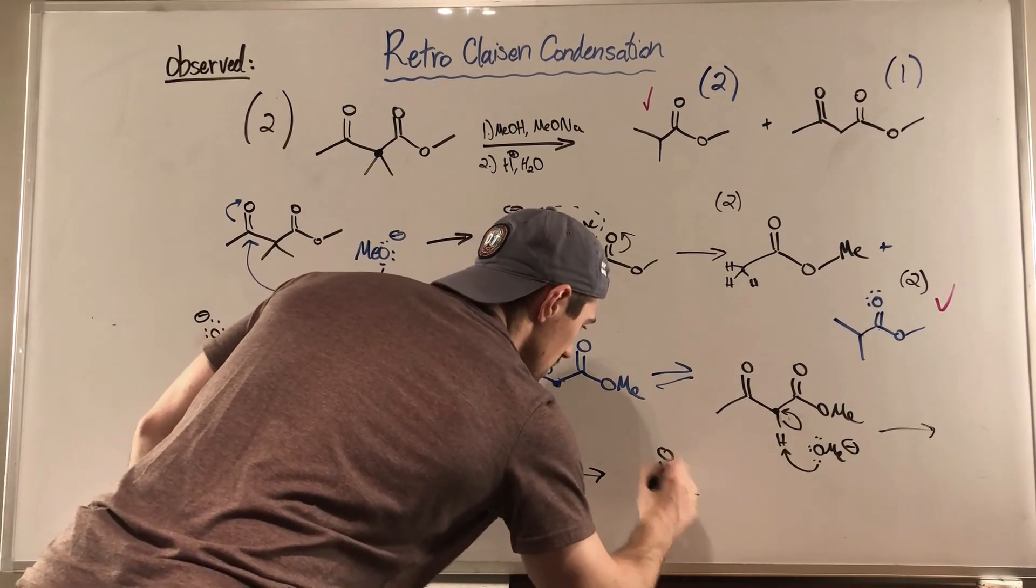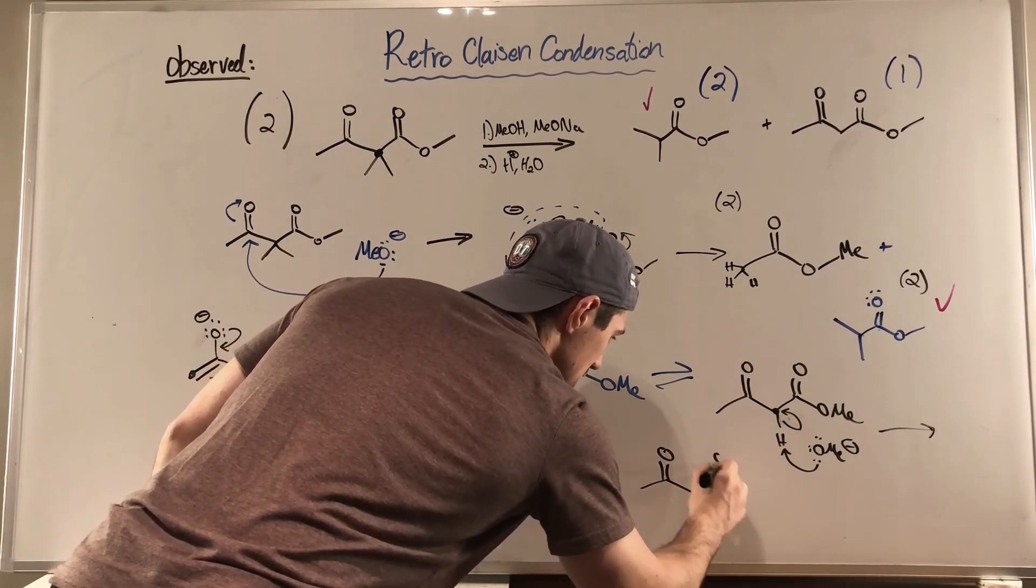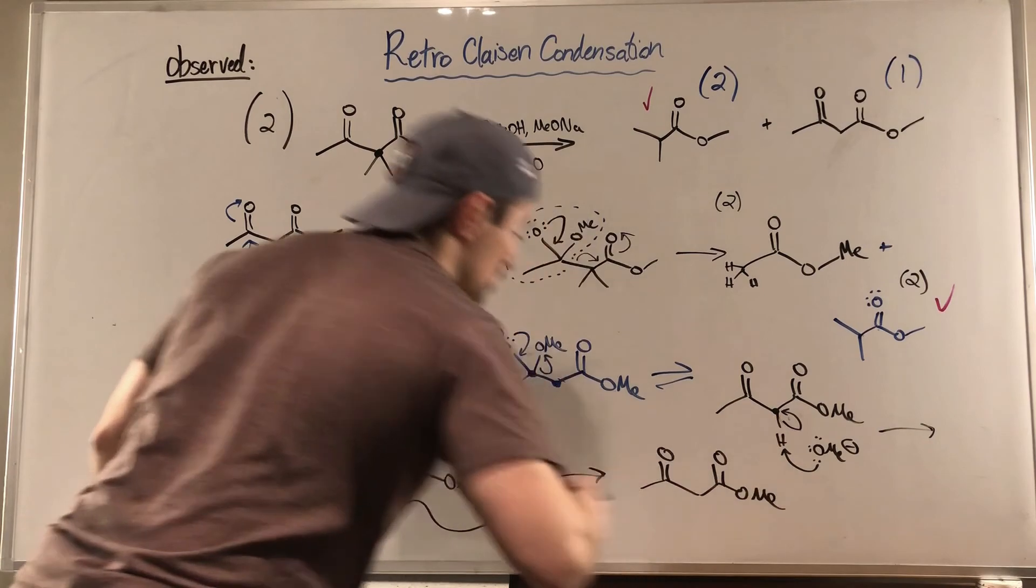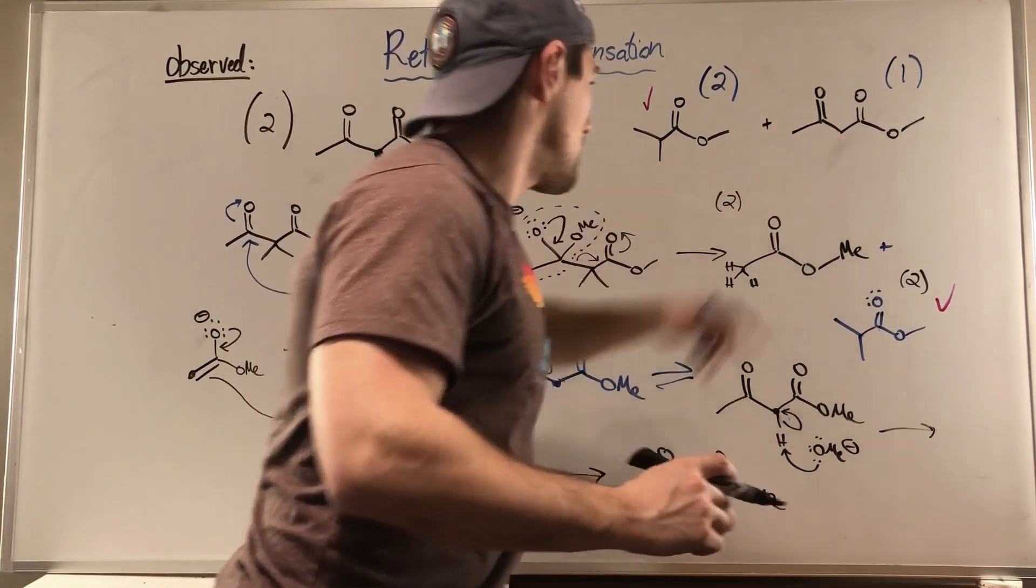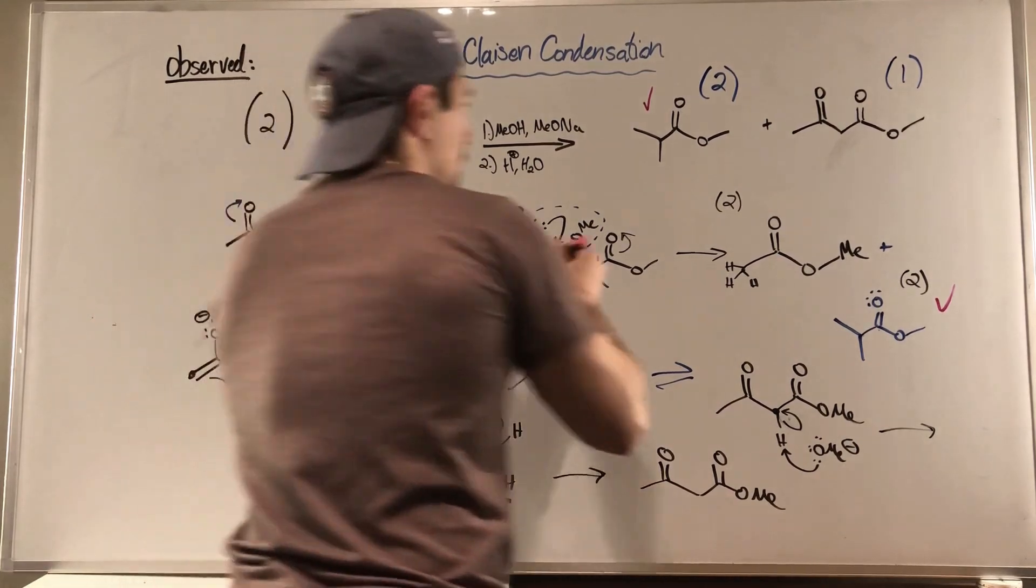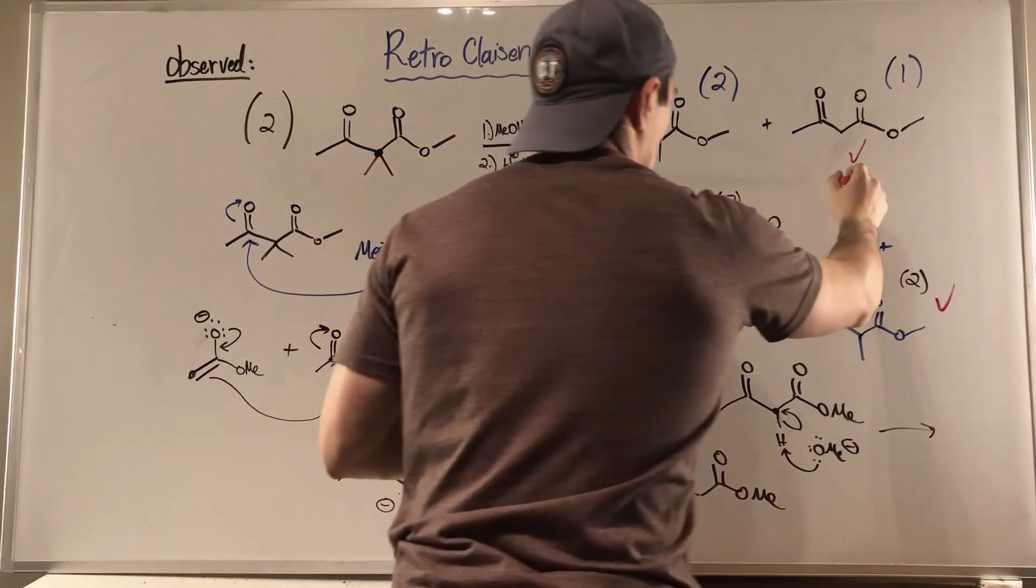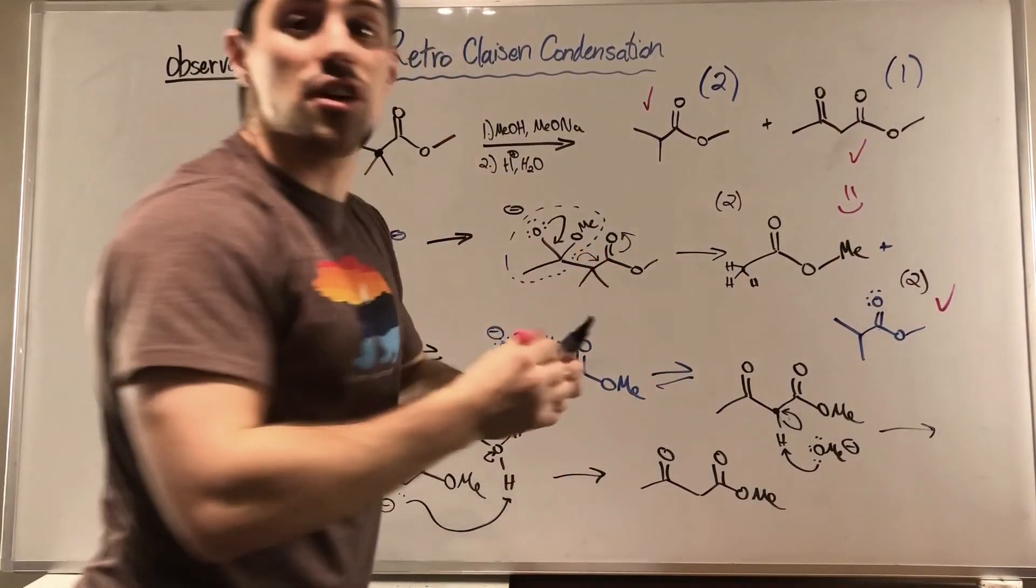And that is how we get the mystery piece to this retro Claisen. That piece is this piece. Bring out the pink marker. Draw a check mark. And why not? A smiley face to boot.